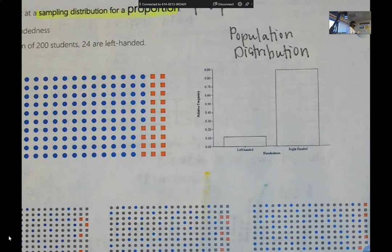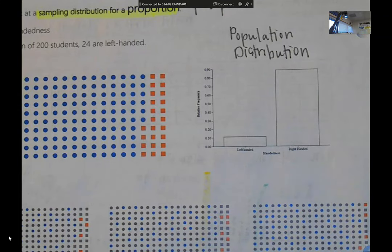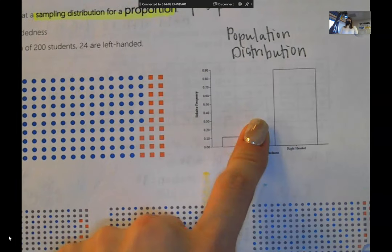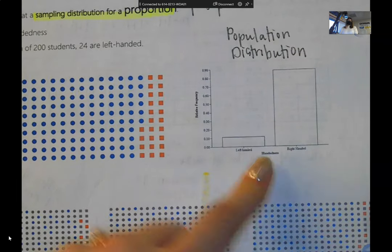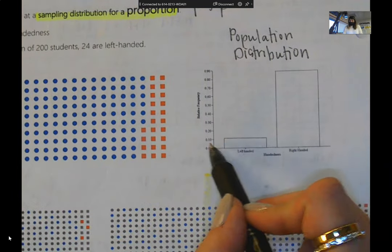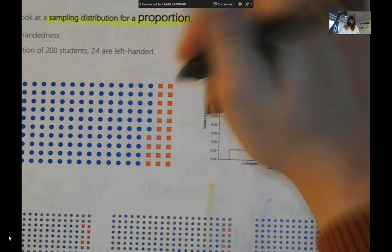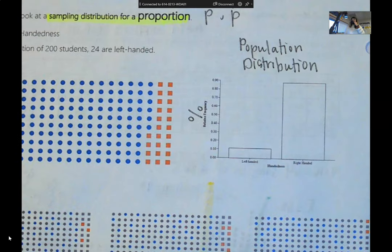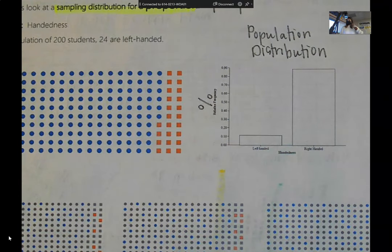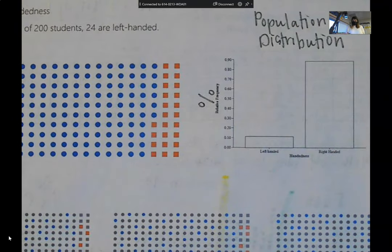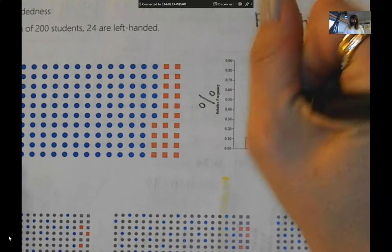This bar chart is our population distribution. Why all of a sudden are we doing a bar chart instead of a dot plot? Well, this is categorical data. So one category is right handed. The other category is left handed. So because it's categorical data, how we graph it is as a bar chart or a pie graph.